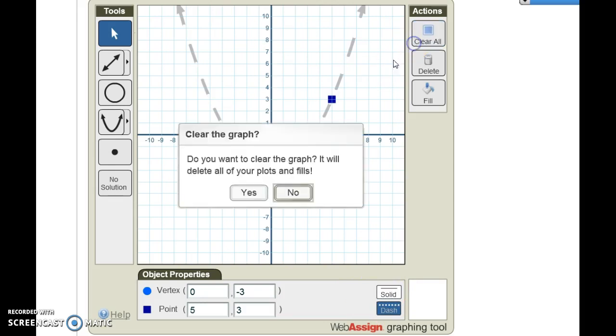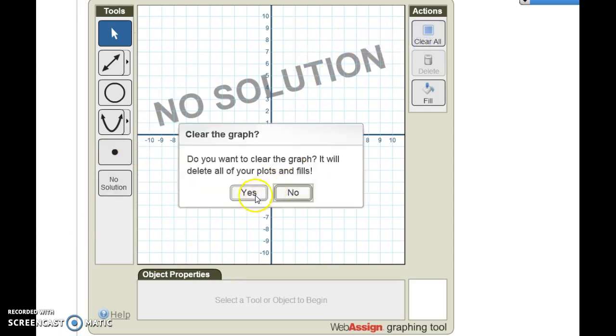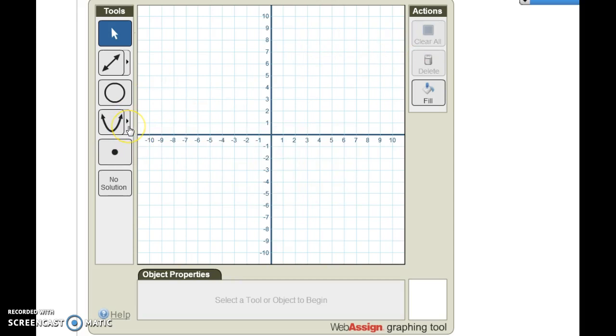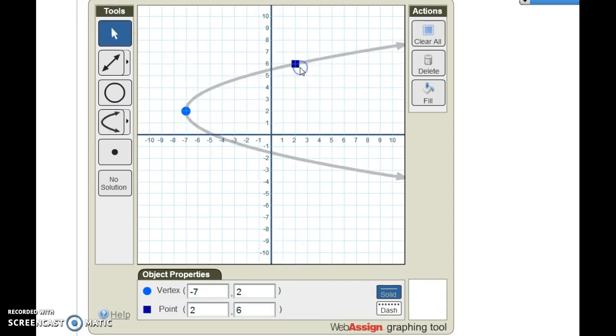If ever you're faced with a problem that ends up having no solution, select the no solution button and that will be the answer. A couple other options here. If you want to draw a sideways parabola, see this arrow, click on that and you'll be able to draw a parabola that opens up sideways.